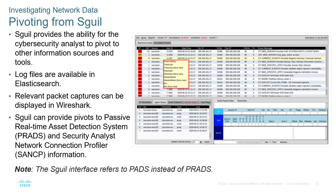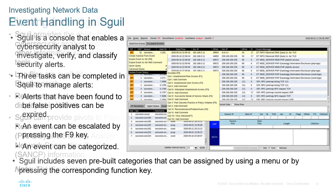Pivoting from Squil: Squil provides the ability for cybersecurity analysts to pivot to other information. Log files are available in Elasticsearch. Relevant packet captures can be displayed in Wireshark. Squil can provide pivots to passive real-time asset detections and other security connections. It's about linkages between the tools and understanding that Squil is an interface that will refer to other areas as necessary. Squil is the console or dashboard that allows the analyst to investigate, verify, and classify different security alerts.